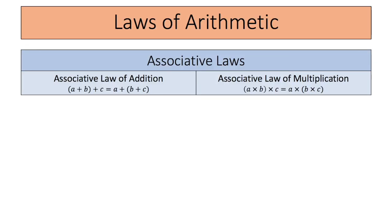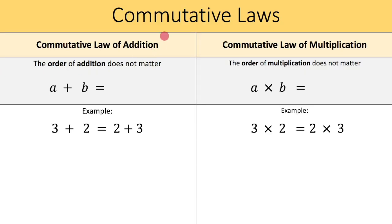If we now recap what we've learned about the associative laws: there are two associative laws — the associative law of addition and the associative law of multiplication. Let's now talk about the commutative laws. There are also two commutative laws: the commutative law of addition and the commutative law of multiplication. Let's begin with the commutative law of addition, which tells me that the order of addition does not matter.